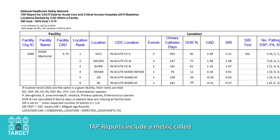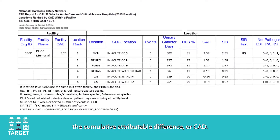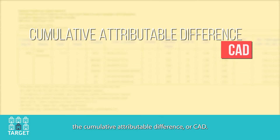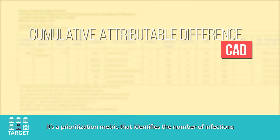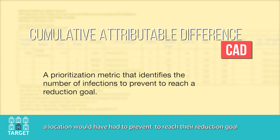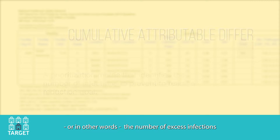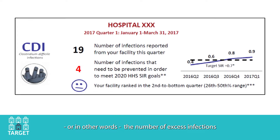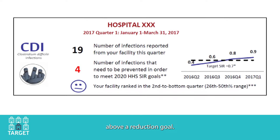TAP reports include a metric called the Cumulative Attributable Difference, or CAD. It's a prioritization metric that identifies the number of infections a location would have had to prevent to reach their reduction goal — in other words, the number of excess infections above a reduction goal.